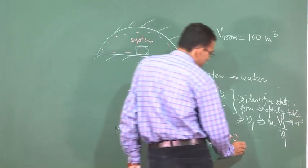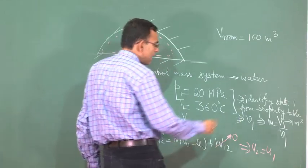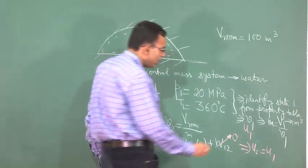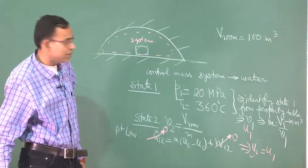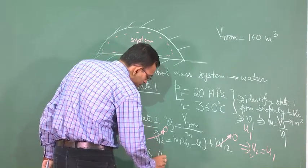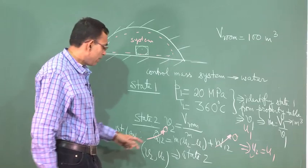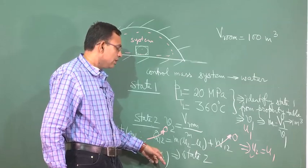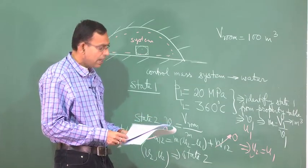Therefore, from the first law equation, we get u2 equals u1. u1 is identified from the property table — both v1 and u1 can be obtained from the table. That u1 is the same as u2. Now we identify state 2 from the combination of v2 and u2.